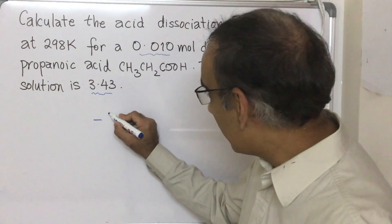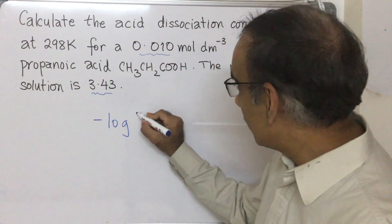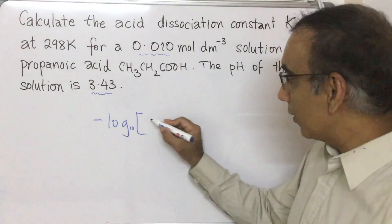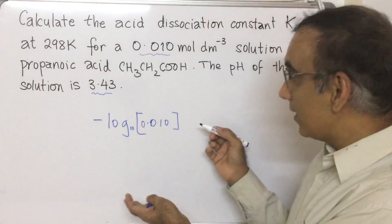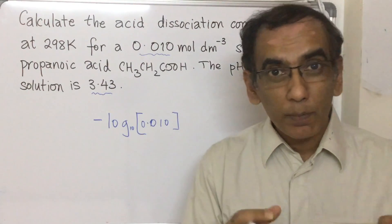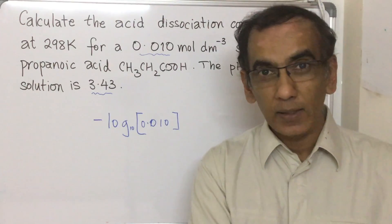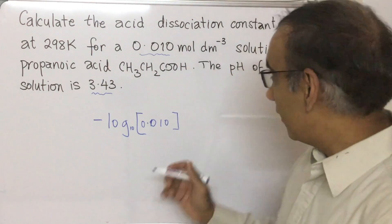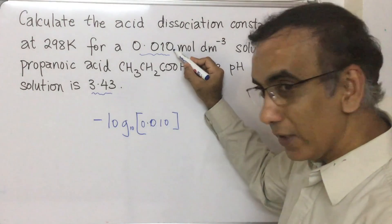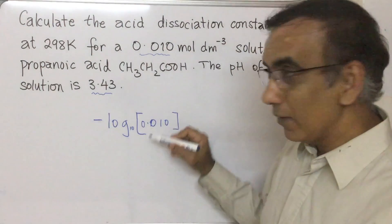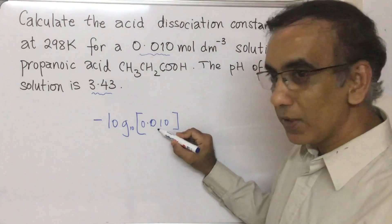In this particular case, if this were a strong monoprotic acid, one with just one hydrogen like HCl or HNO₃, then you simply take its concentration, you find the negative log to the base 10, and of course if the concentration is one this would come to zero.